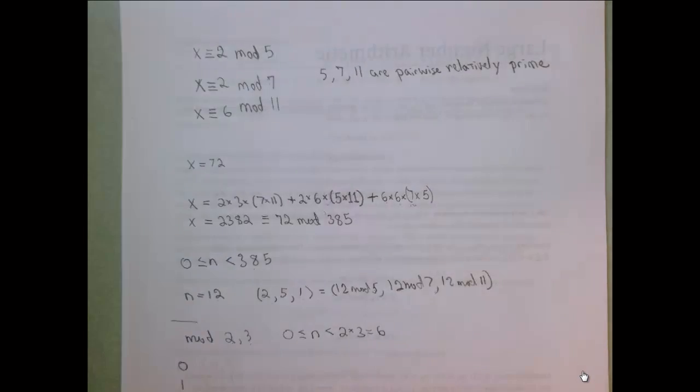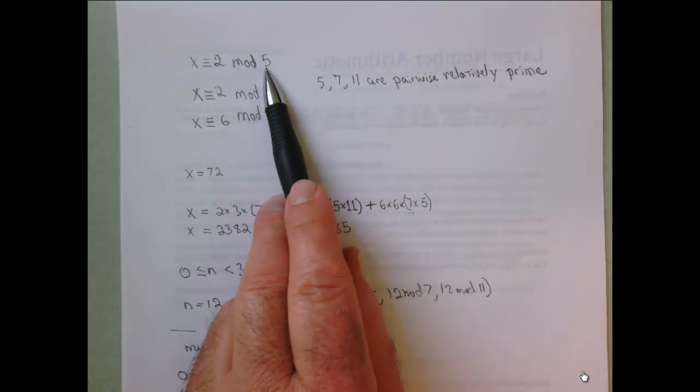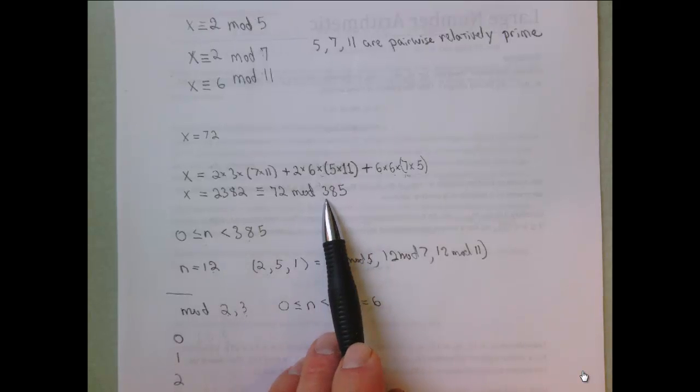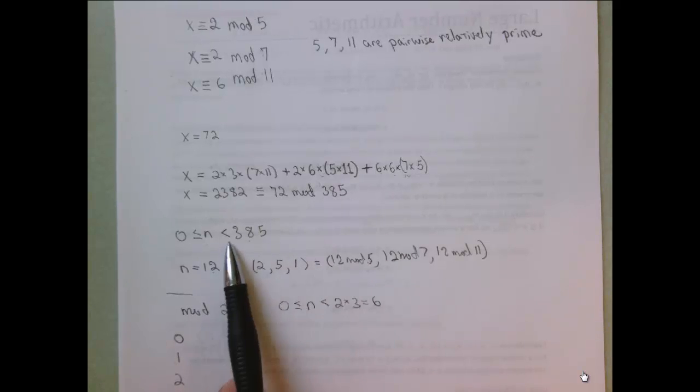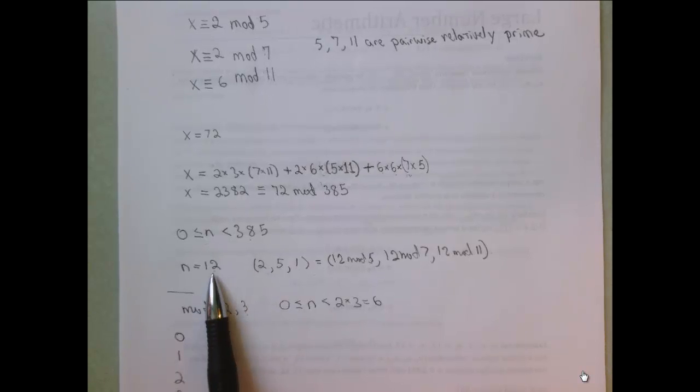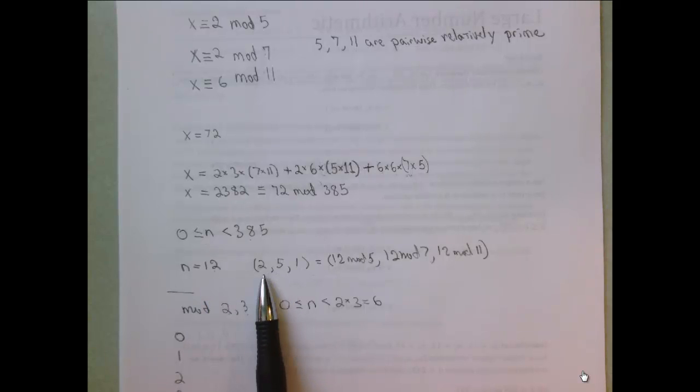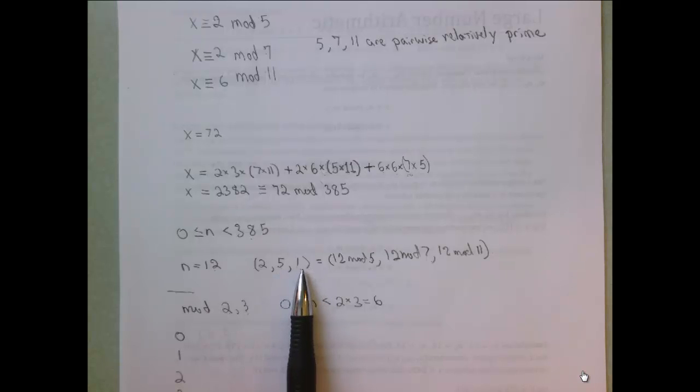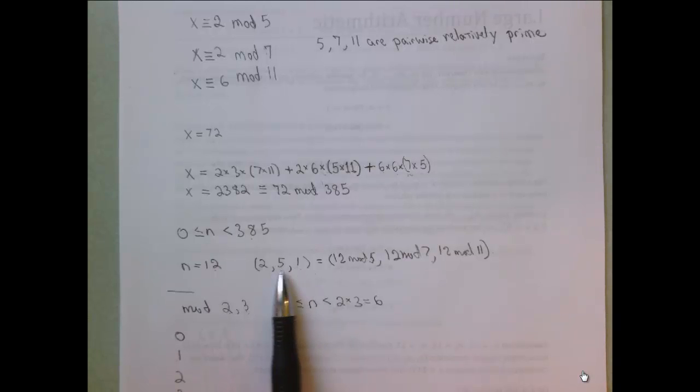Let's take a look at that by example. Suppose our moduli were 5, 7, and 11. The corollary tells us that if we look at all integers in the range 0 through 384, it must be the case that if we divide all of those integers by 5, 7, and 11, the ordered collection of remainders has to be unique for each one. For instance, if we took 12 and divided it by 5, we'd get a remainder of 2, divided by 7 we'd get 5, and divided by 11 we'd get 1. That triple 2, 5, 1 in that order can't be repeated anywhere in the range from 0 up to 385.